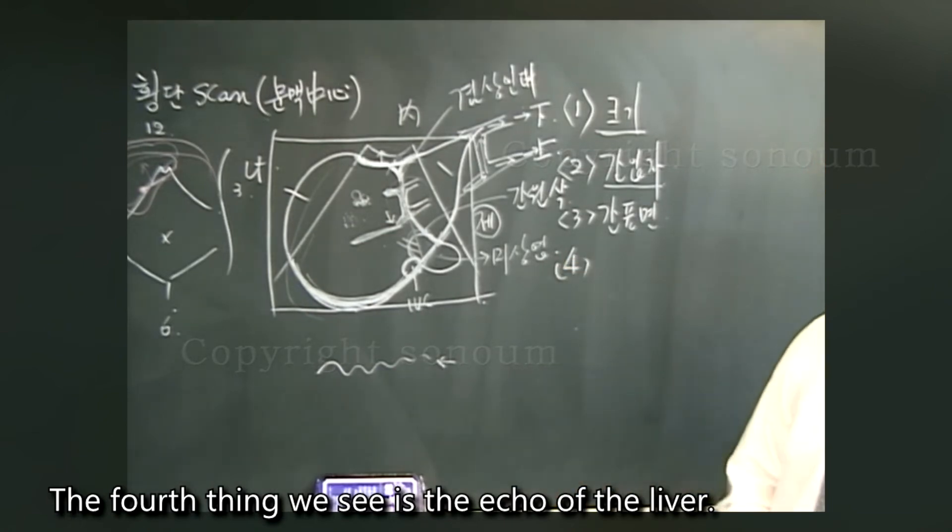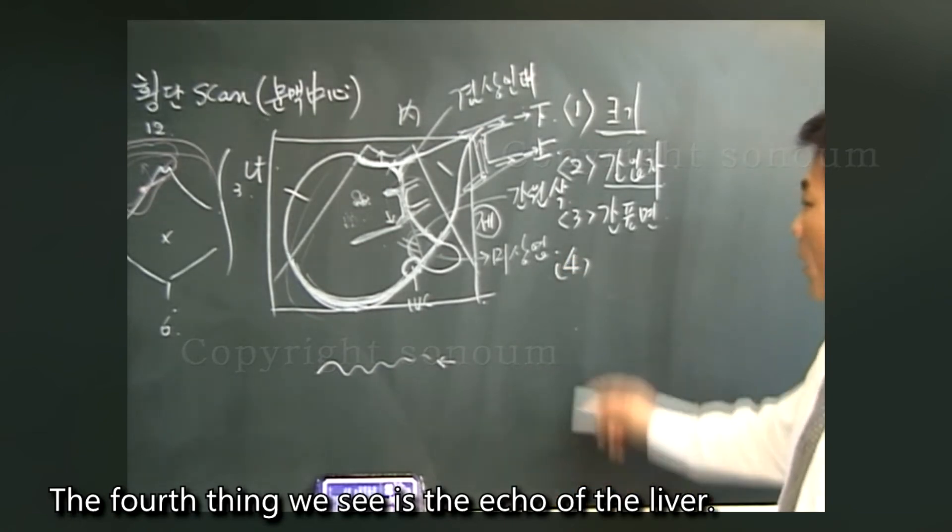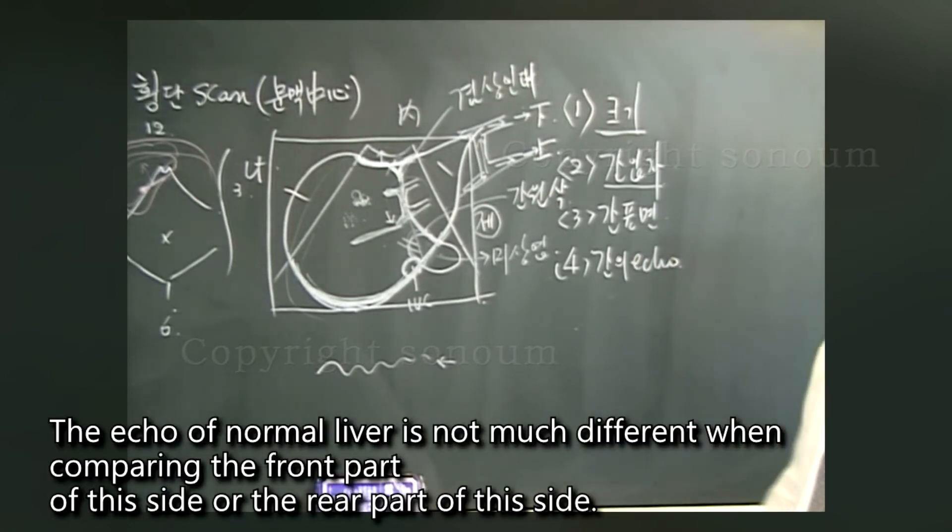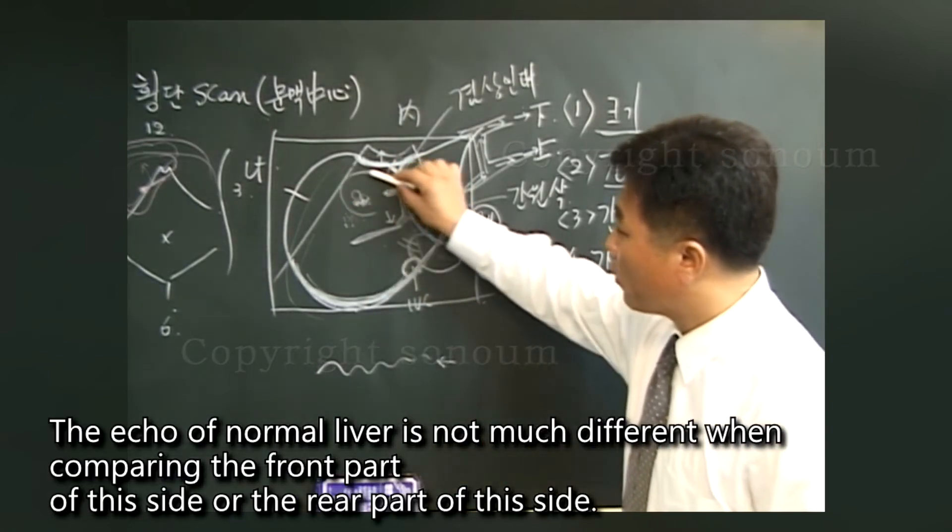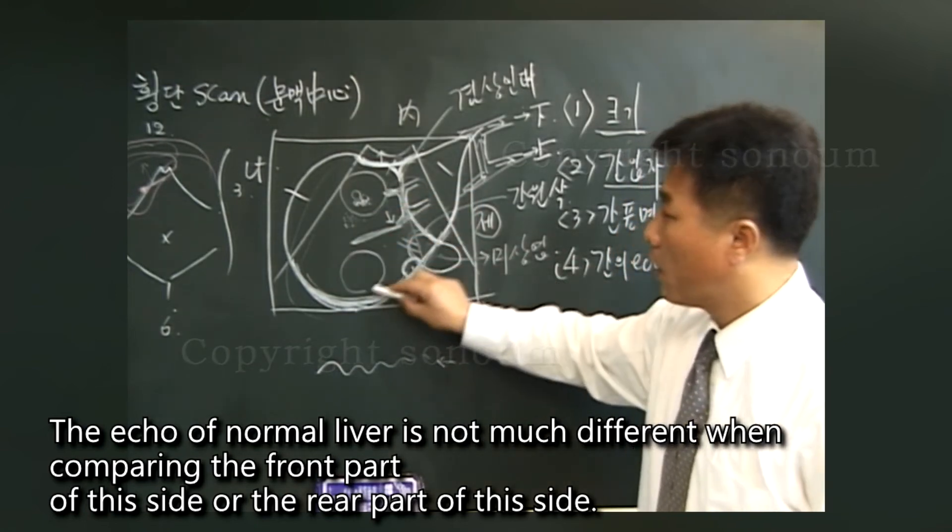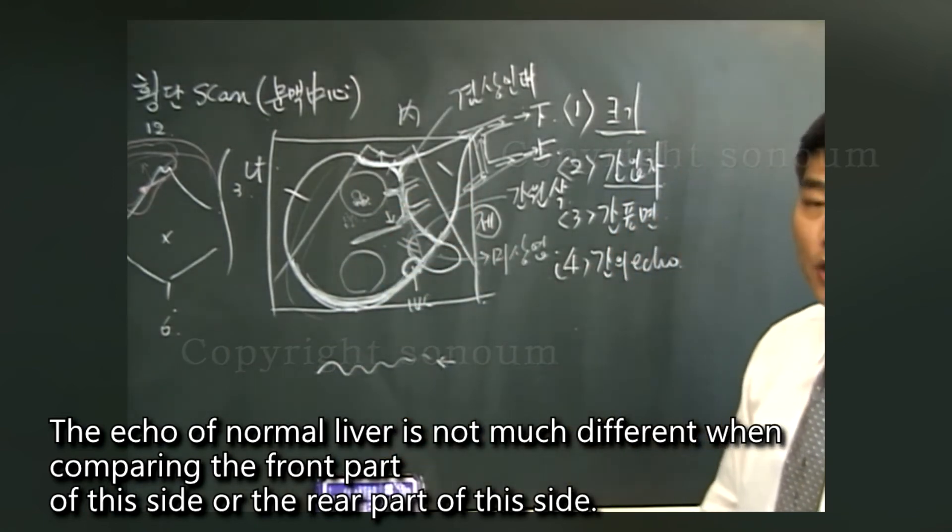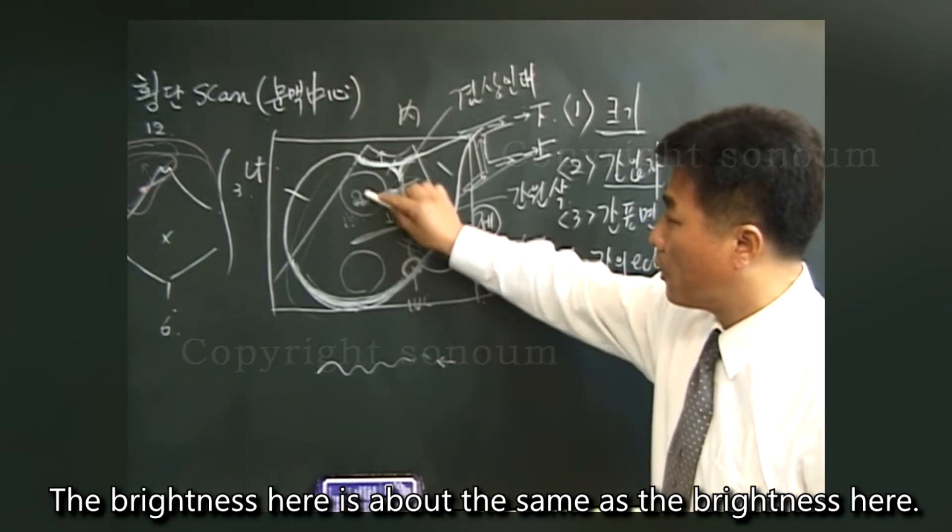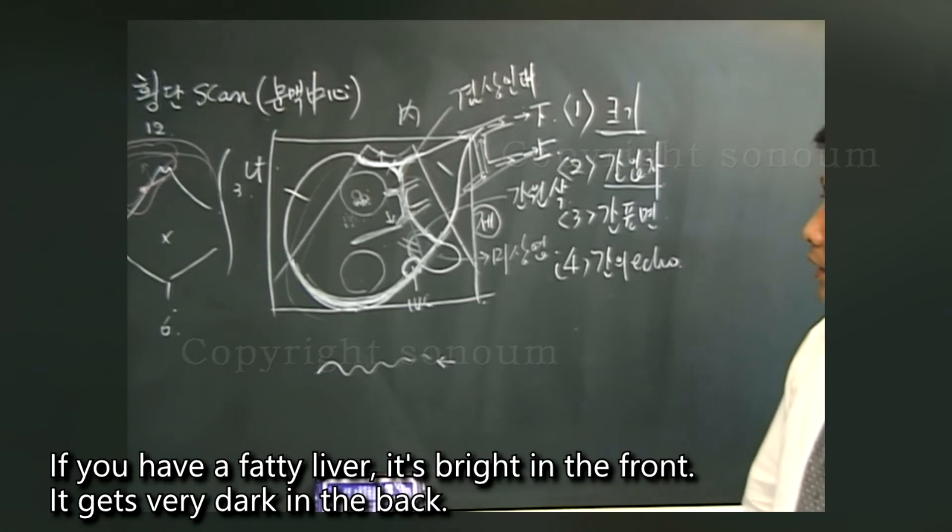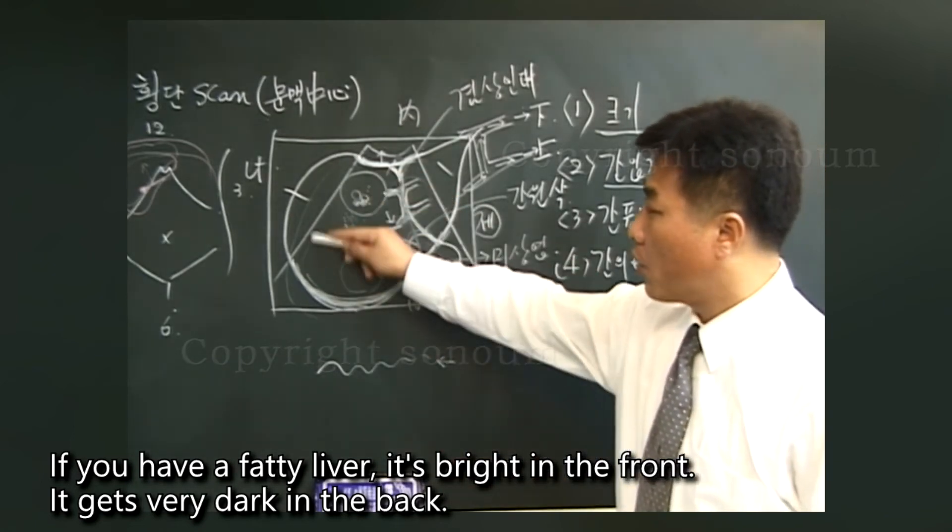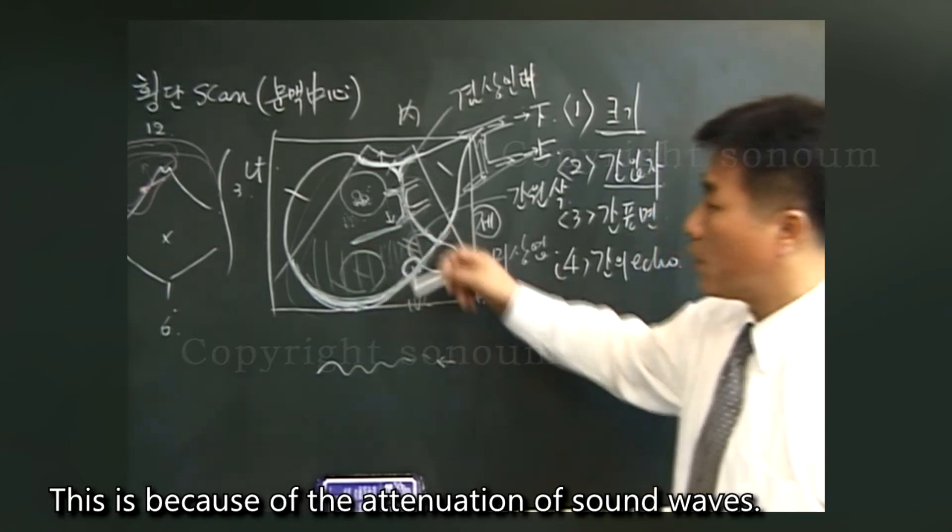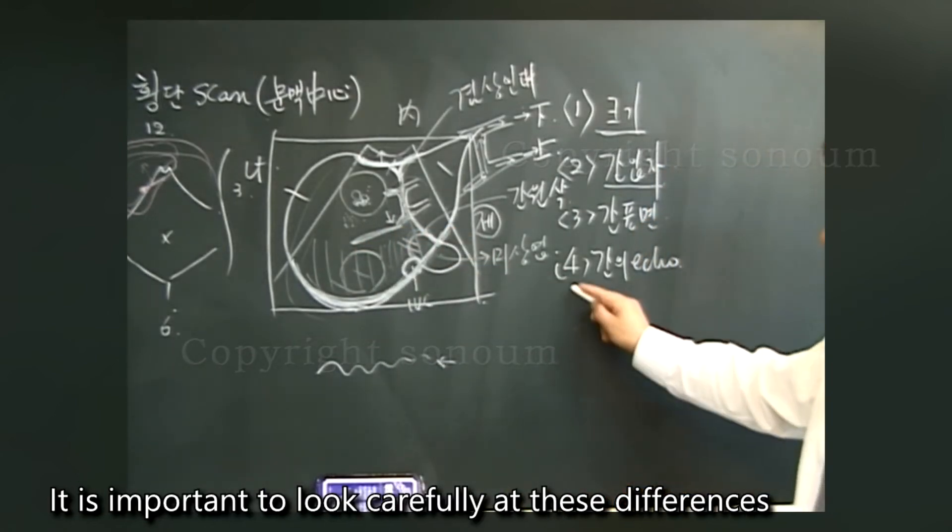The fourth thing we see is the echo of the liver. The echo of normal liver is not much different when comparing the front part of this side or the rear part of this side. The brightness here is about the same as the brightness here. If you have a fatty liver, it's bright in the front. It gets very dark in the back. This is because of the attenuation of sound waves. It is important to look carefully at these differences.